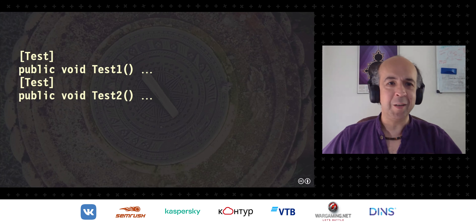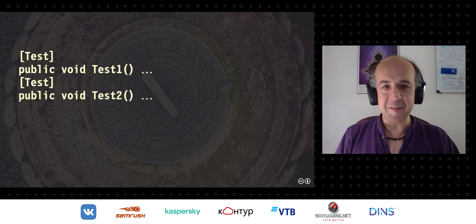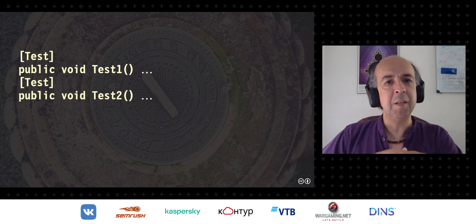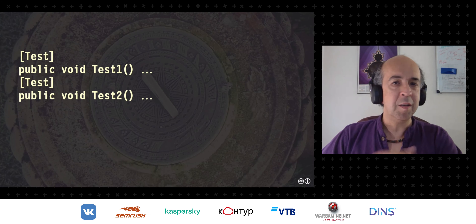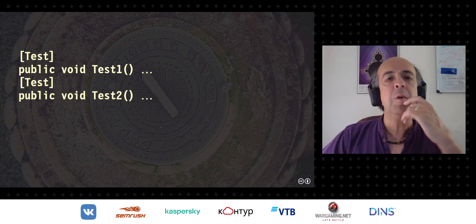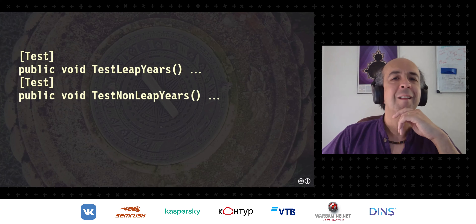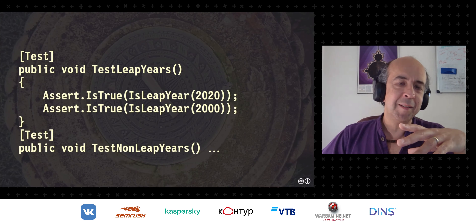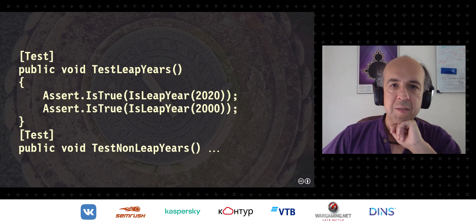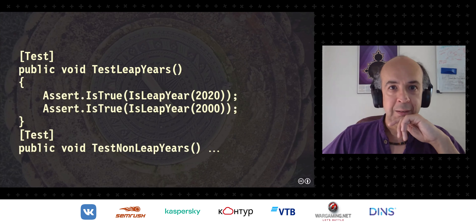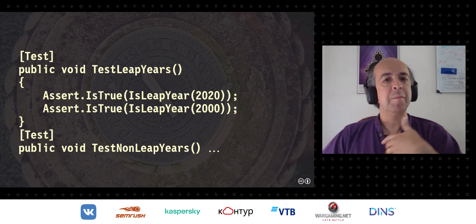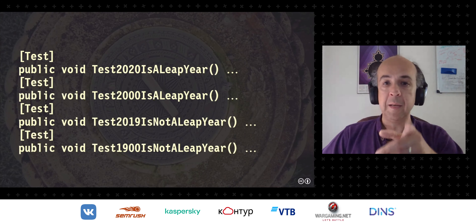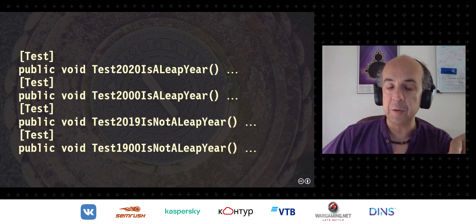The goal here is to communicate the domain. Leap years is a domain — it has rules. Can you express what's important? Well, there are leap years and non-leap years. Now we're getting somewhere. We might have: 2020 is a leap year, 2000 is a leap year. But the reason 2000 is a leap year is actually different from why 2020 is a leap year — there are two kinds of leap year. So we'd have: '2020 is a leap year,' '2000 is a leap year,' '2019 is not a leap year,' '1900 is not a leap year.' And 1900 is not a leap year in the Gregorian calendar — though it was in the Julian calendar, which was still in use in Russia.